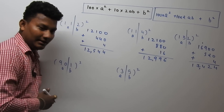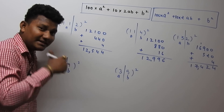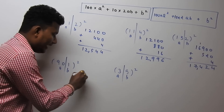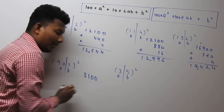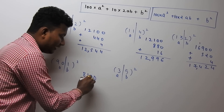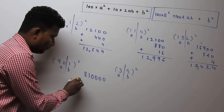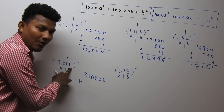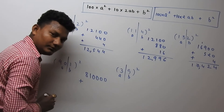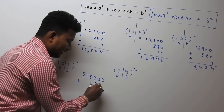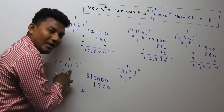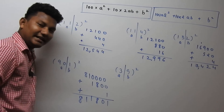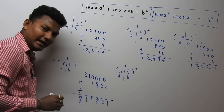Now focus on the 4th example, a bigger one: 901². The value of a is 90 and b is 1. So 90² = 8100, and 8100 × 100 = 810000. Then 2ab = 2 × 90 × 1 = 180, and 180 × 10 = 1800. And 1² = 1. Adding: 810000 + 1800 + 1 = 811801. So the square of 901 is 811801.